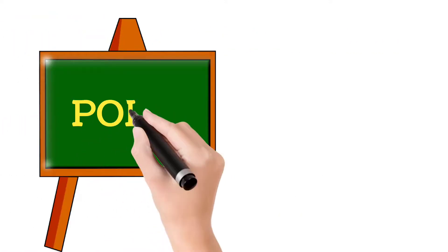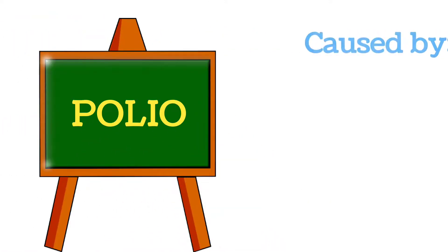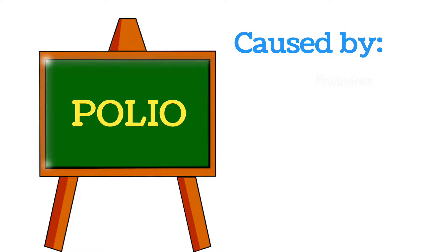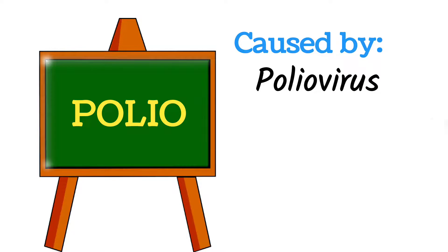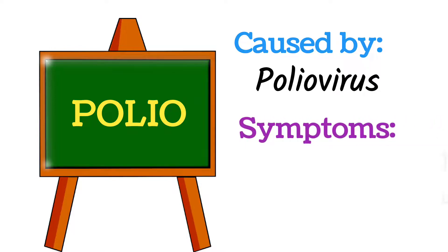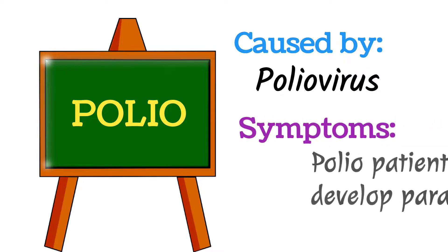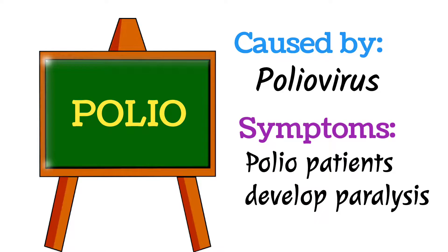Next is Polio. Polio is caused by the Poliovirus, which targets the central nervous system of the patient. The symptoms of polio include paralysis, which ultimately damages one or many parts of the body.